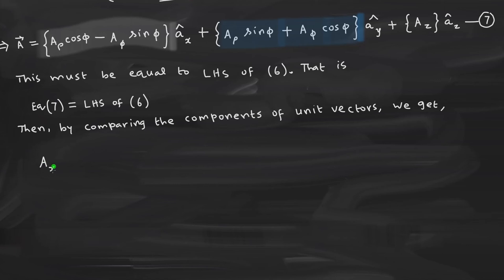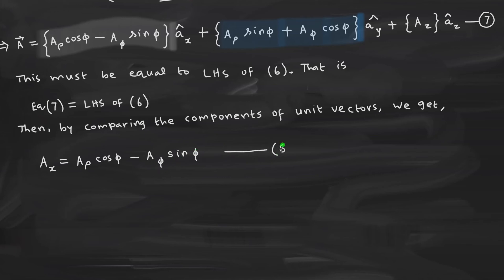The x component, ax, will be equal to a_rho times cos(φ) minus a_φ multiplied by sin(φ), and that's all. We got one equation — let us call this equation number 8. Similarly we will be getting the equation for ay, which is equation number 9.